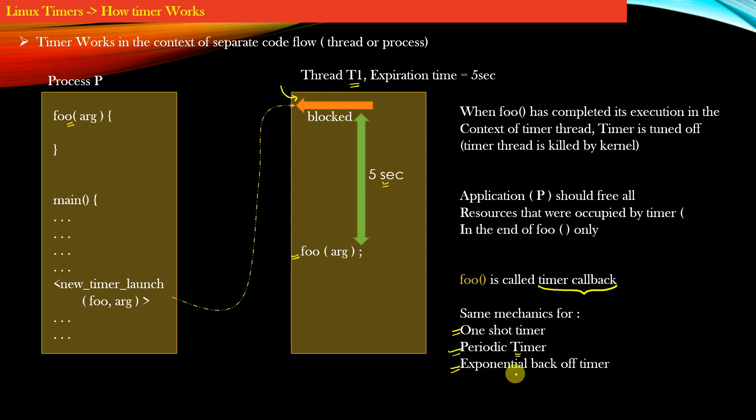And in case of exponential backoff timer, once the function foo has completed its execution, the operating system again puts the timer thread T1 in the blocked state. But instead of now waiting for 5 seconds, we will wait for 10 seconds. And only after 10 seconds has elapsed, then only the timer callback is invoked.